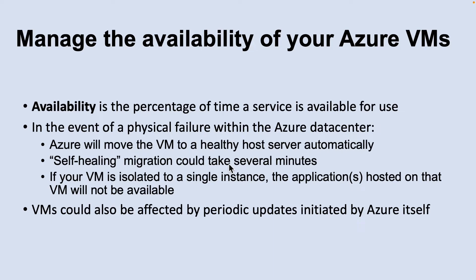Now let's look at how you can manage the availability of your virtual machines. Availability is the percentage of time a service is available for use. Azure virtual machines run on physical servers hosted within Azure data centers, and there are chances of a failure. If the physical server fails, the virtual machines hosted on it will also fail. Azure will move the virtual machine to a healthy host server automatically; however, this self-healing migration could take several minutes, during which the applications hosted on that virtual machine will not be available.